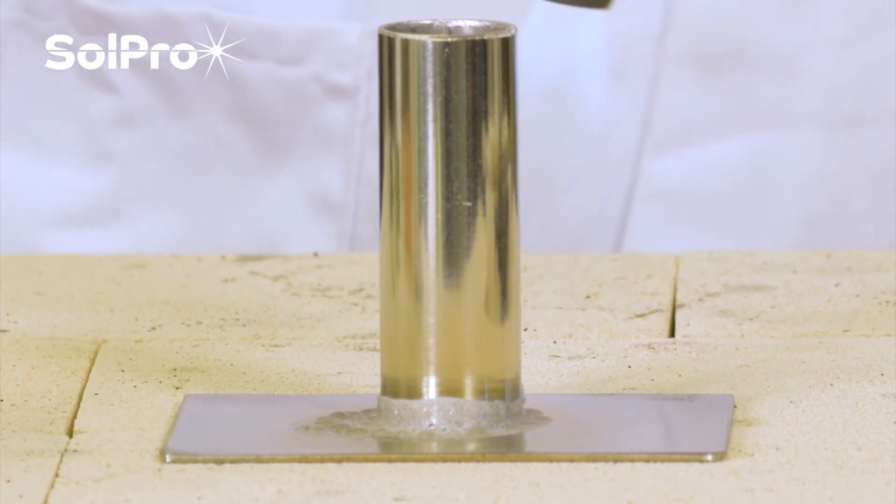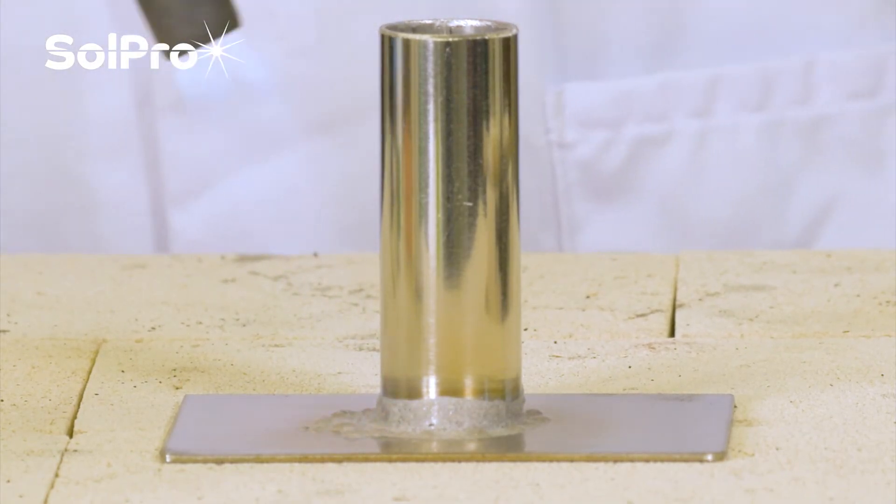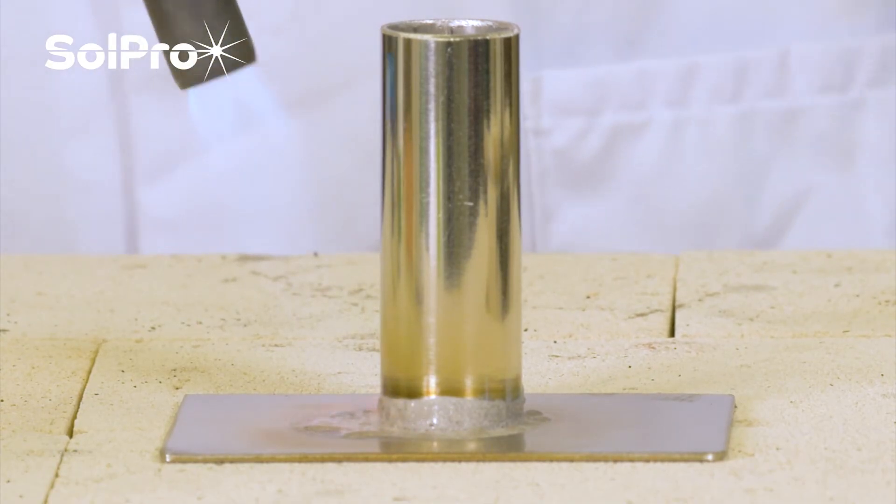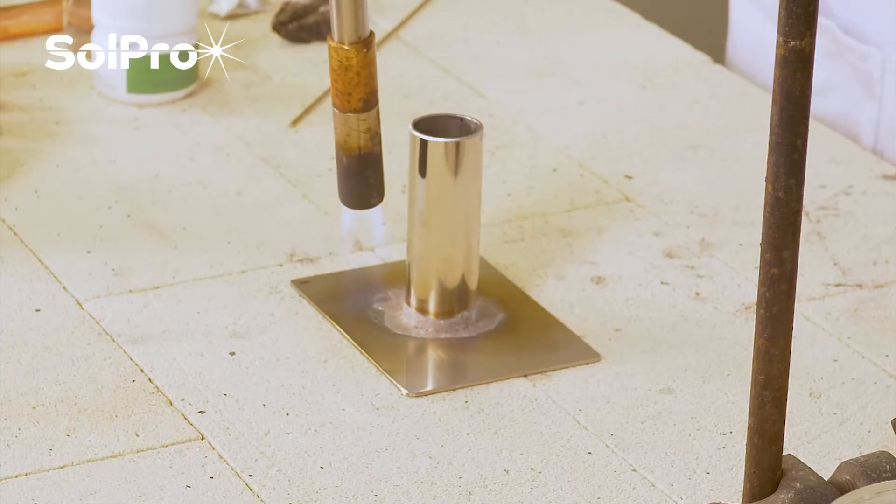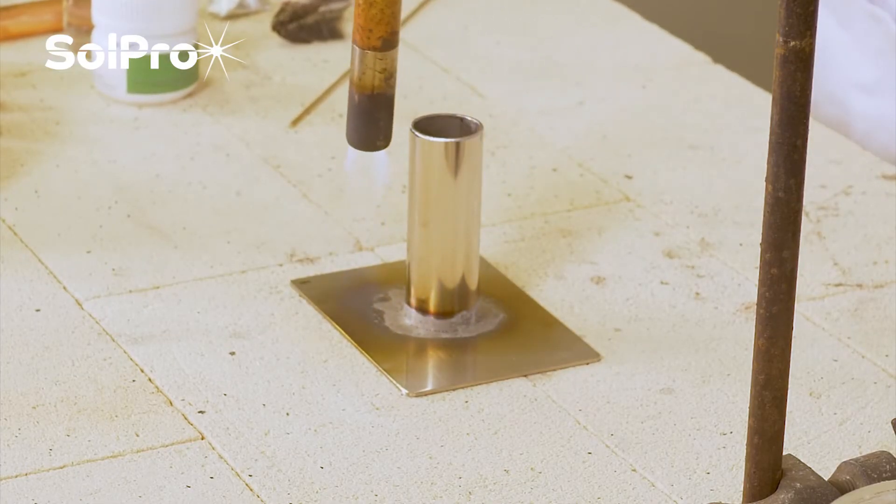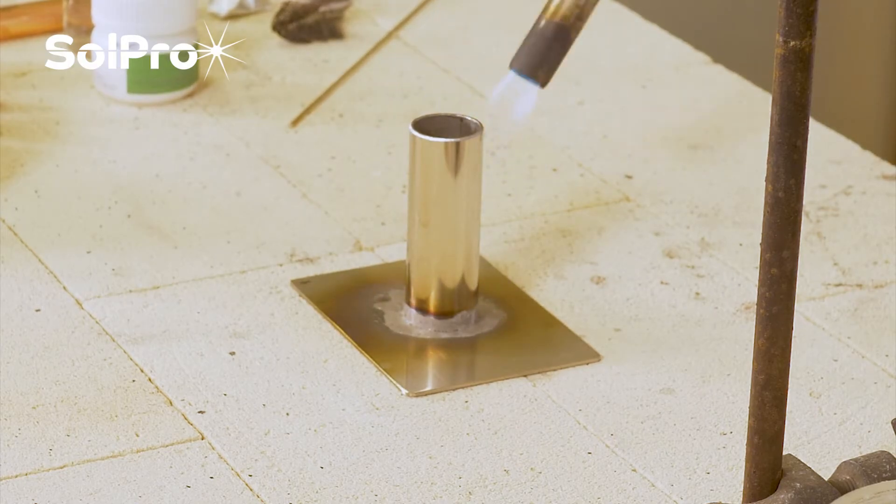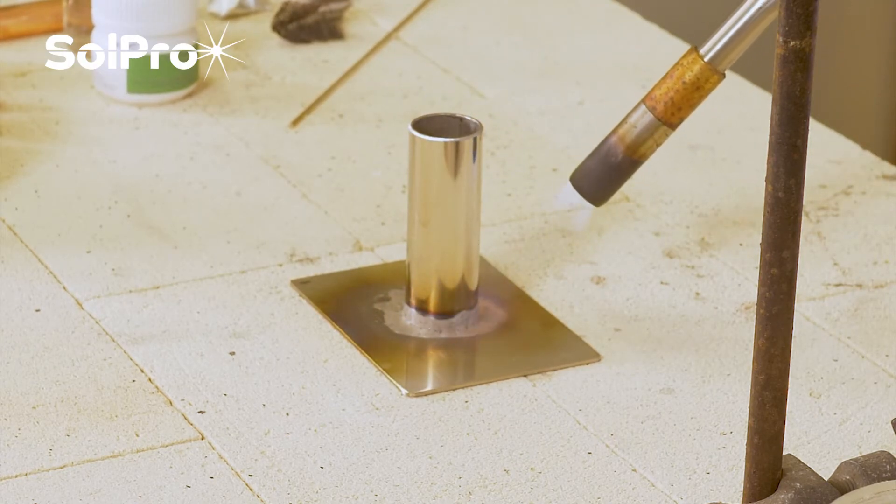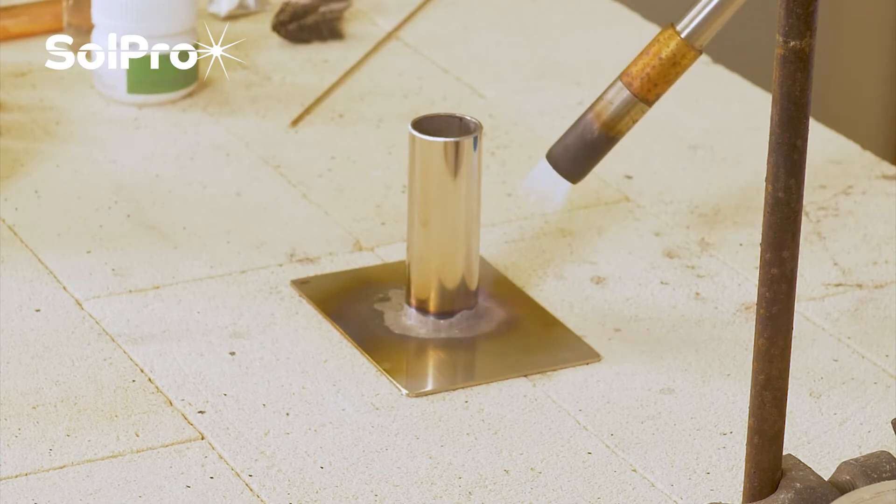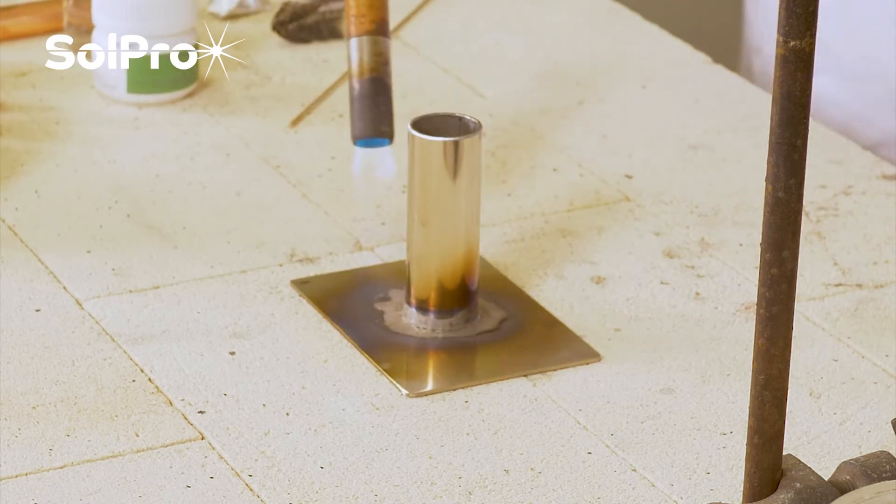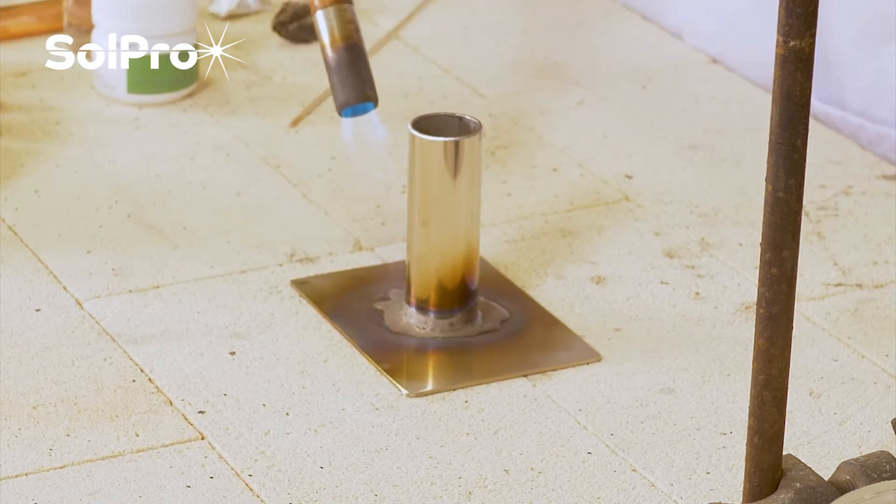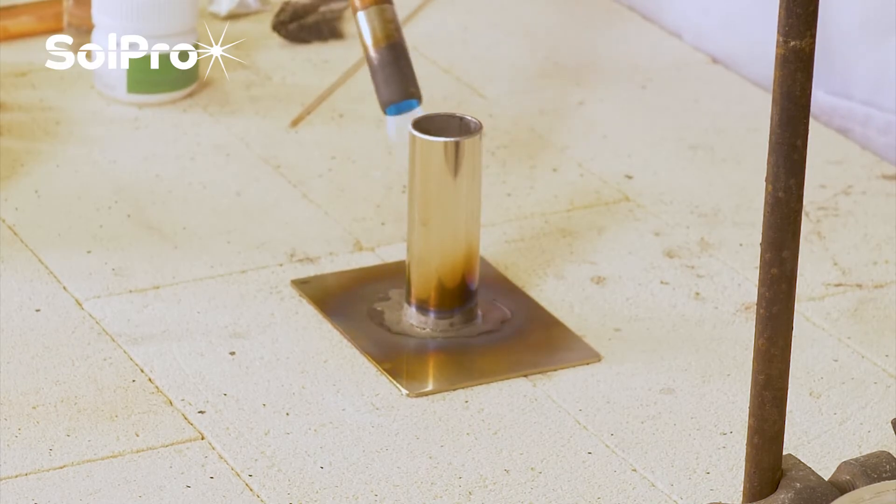You can just see the outside of the stainless is starting to go a browny colour, and where the flux is it's staying a nice clean white colour. But we've just got to keep going round and round with this to get the heat in. Build up the whole heat. The brazing alloy will flow to the warmest part, so if we don't heat up the tube it will stick to the plate and if we don't heat up the plate it'll stick to the tube. We've got to make sure we get plenty of heat in and be patient.